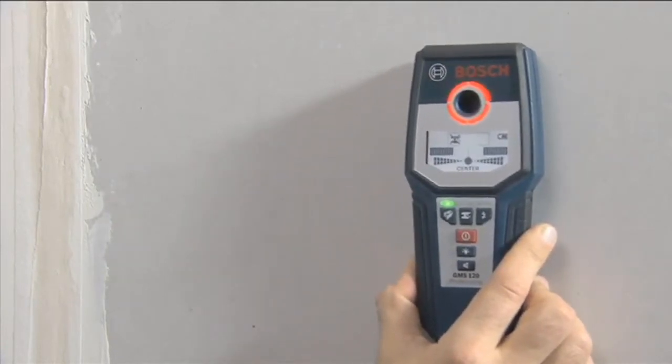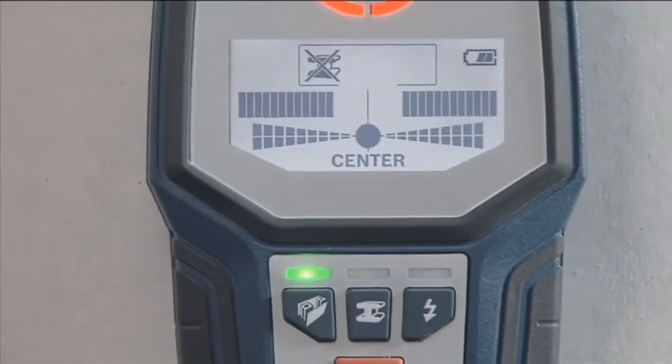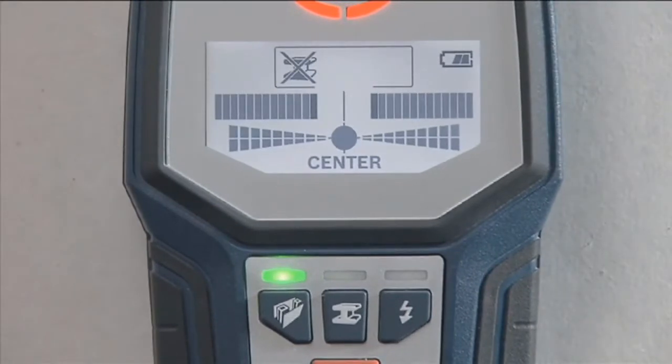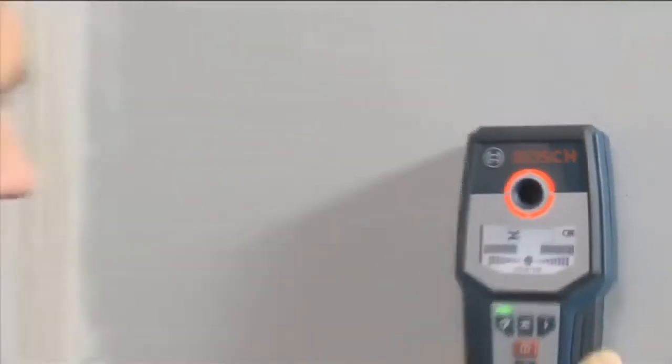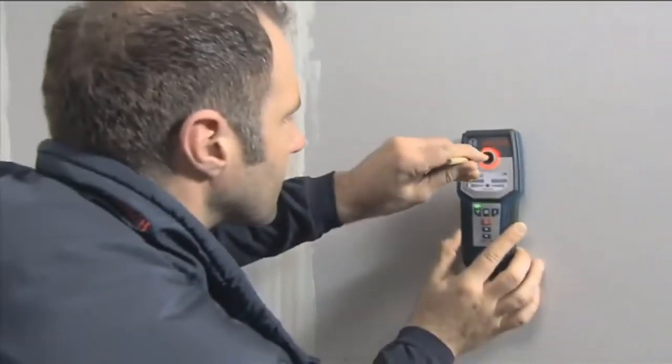The innovative Center Finder Scale makes accurate detection of the object easier and shows you the center of the detected object. You can use the opening in the center of the luminous ring to mark the center of the object you're looking for.